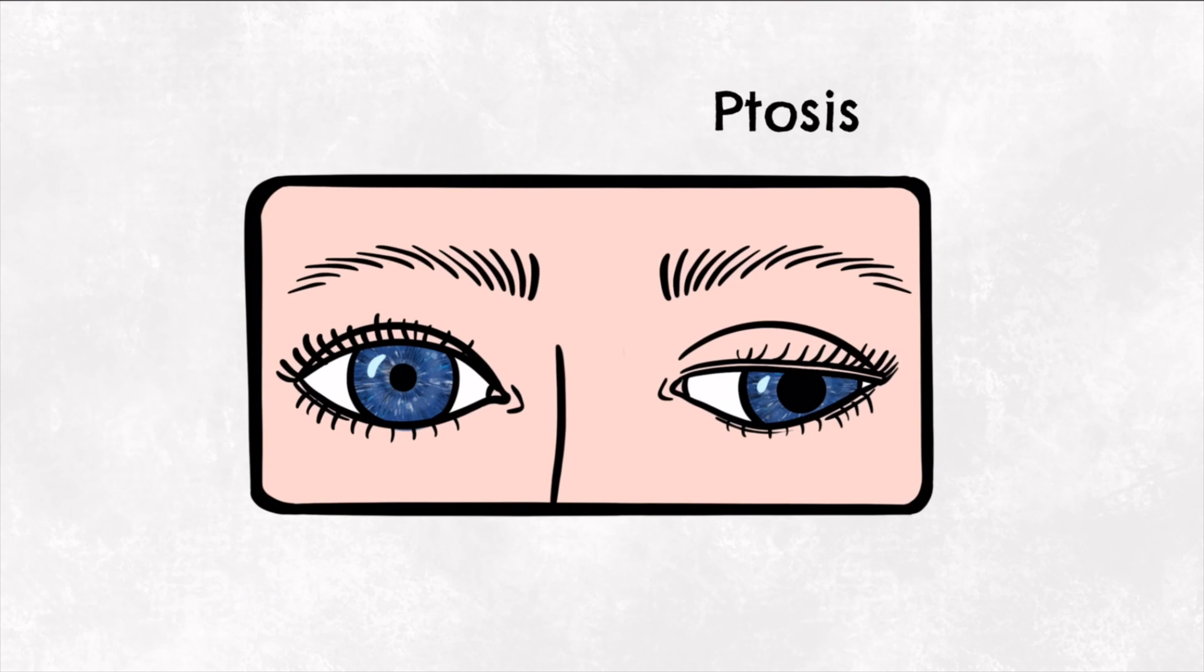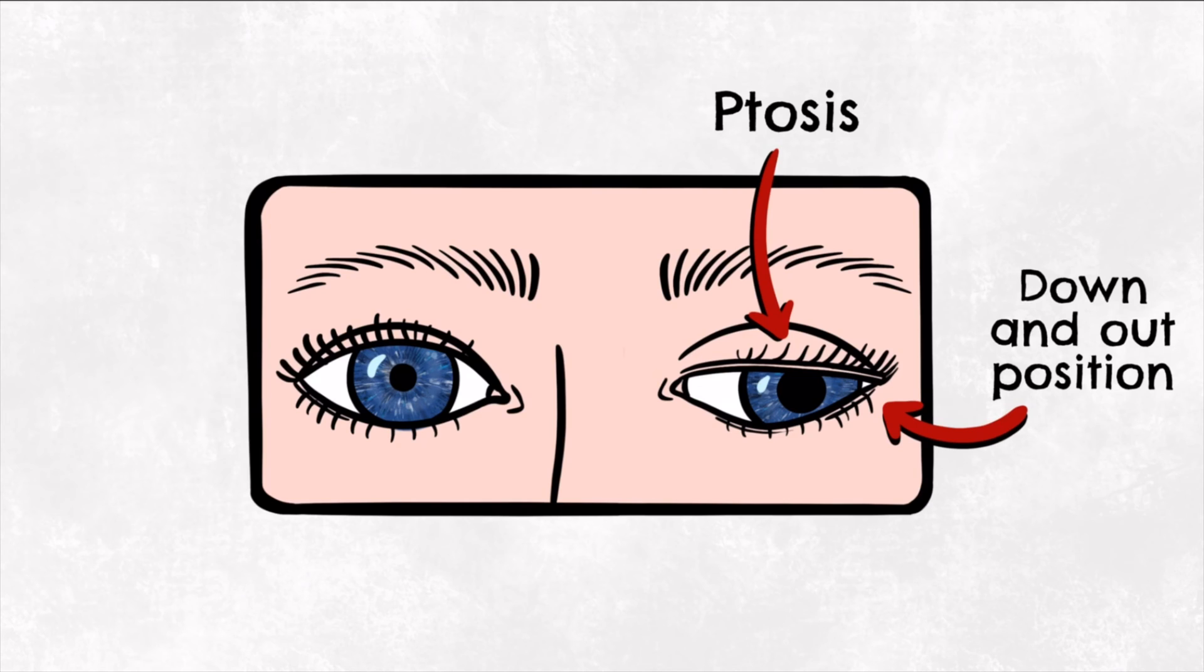Compression of the oculomotor nerve in uncal herniation also affects the eye muscles and may manifest over time with a downward and outward eye deviation with decreased eye movement,